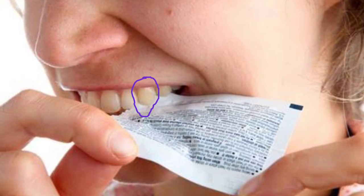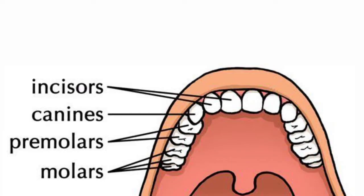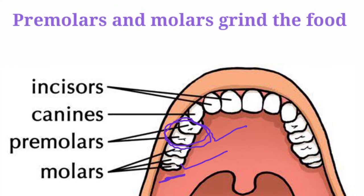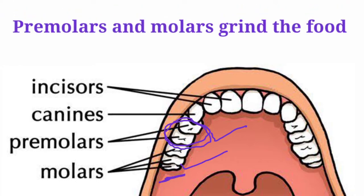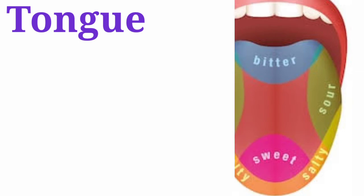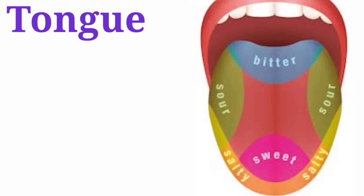These are known as the canines. At the back of the canines are present the premolars and molars. The function of both teeth is similar — they are used to grind food.